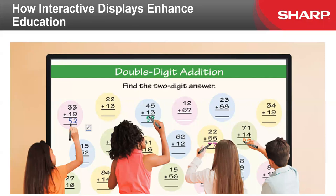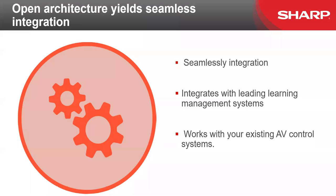When considering any interactive display, think long-term. The operating system you grew up on may not be around in a couple of years, and the software you use today may not be what you renew in three years. So you want to look at an open platform device — meaning no embedded operating system. Think of it as future-proofing your classroom: the board becomes as intelligent or as limited as the device running it, allowing for seamless integration.